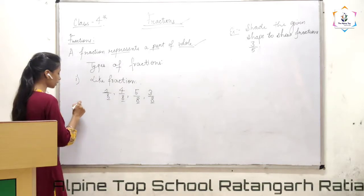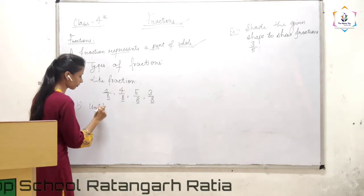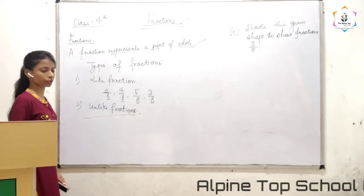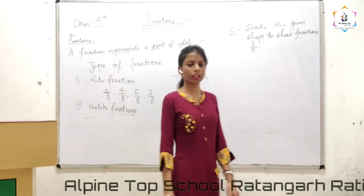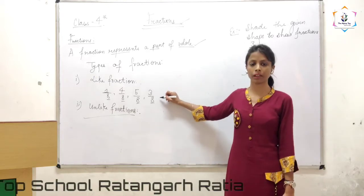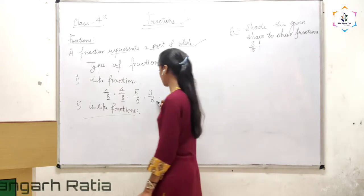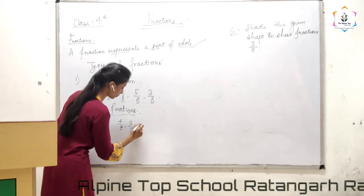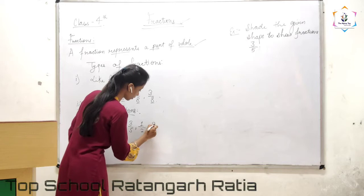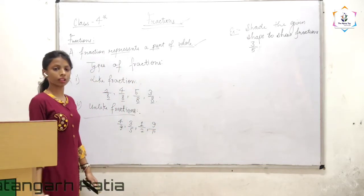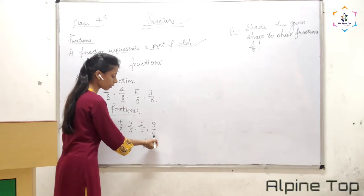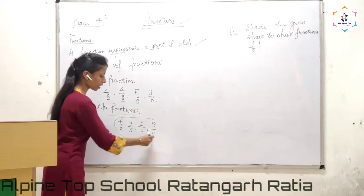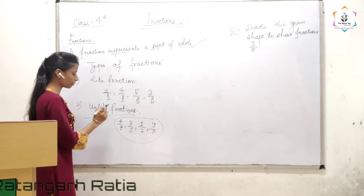Next one is unlike fractions. Those fractions we say unlike fractions in which the denominator values are not equal, not the same. For example: 4 by 9, 3 by 5, 1 by 2, 9 by 11. You can see the denominator values of all the fractions are different. So we say these all fractions are unlike fractions.